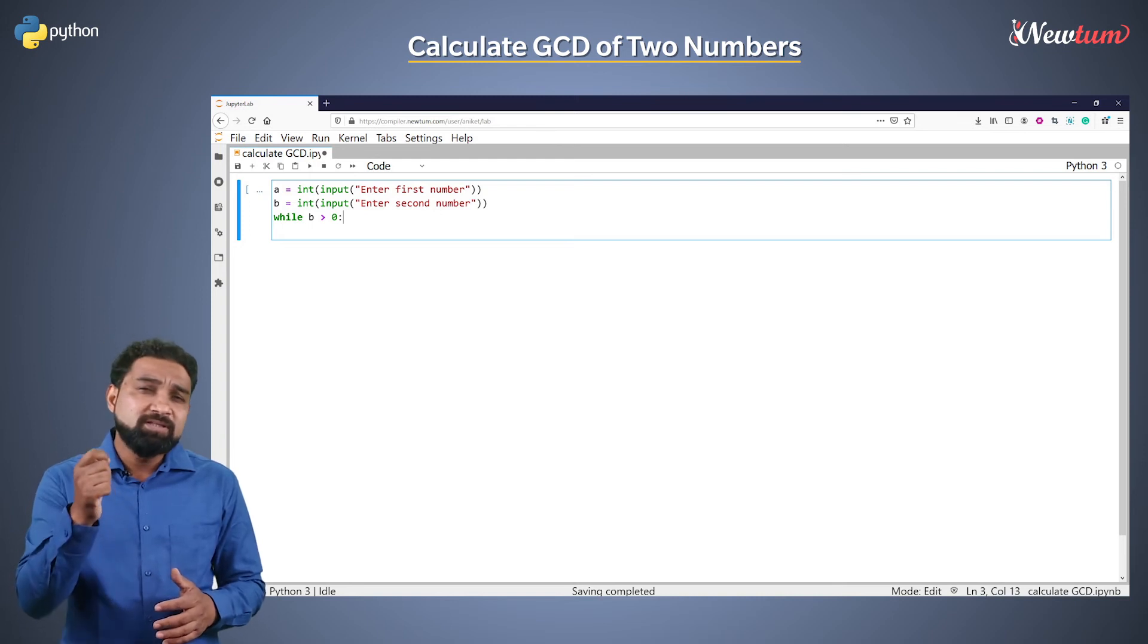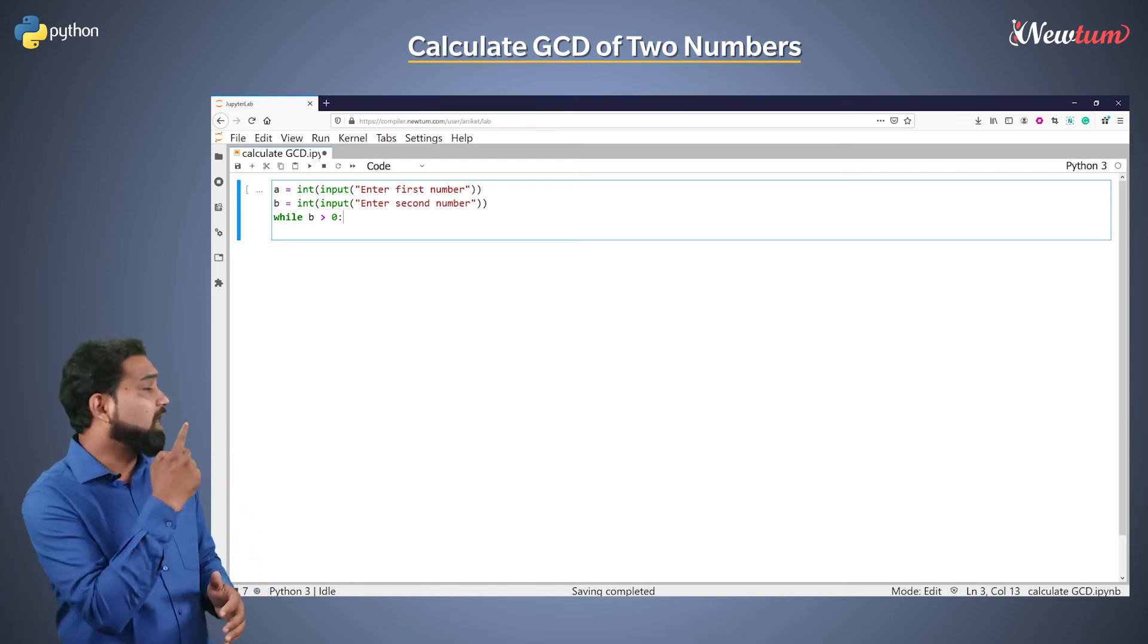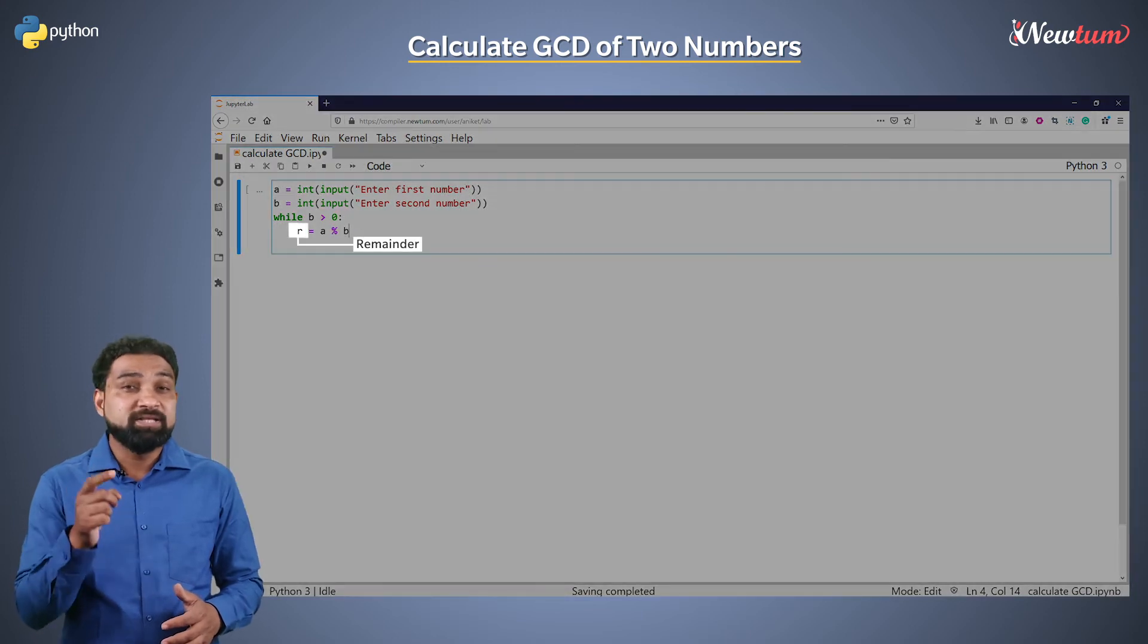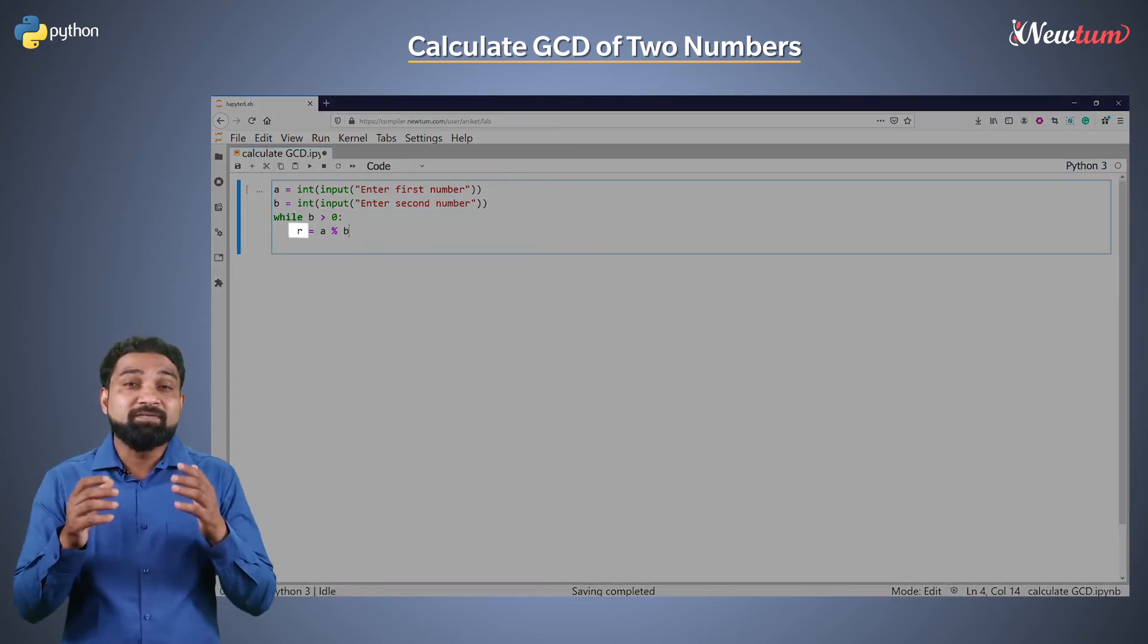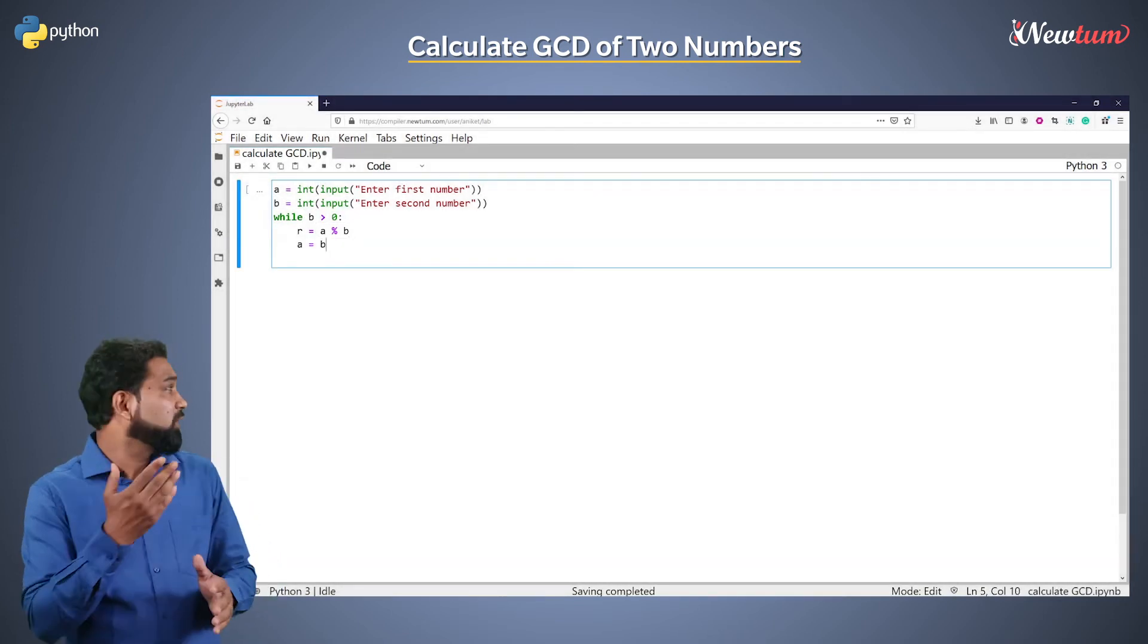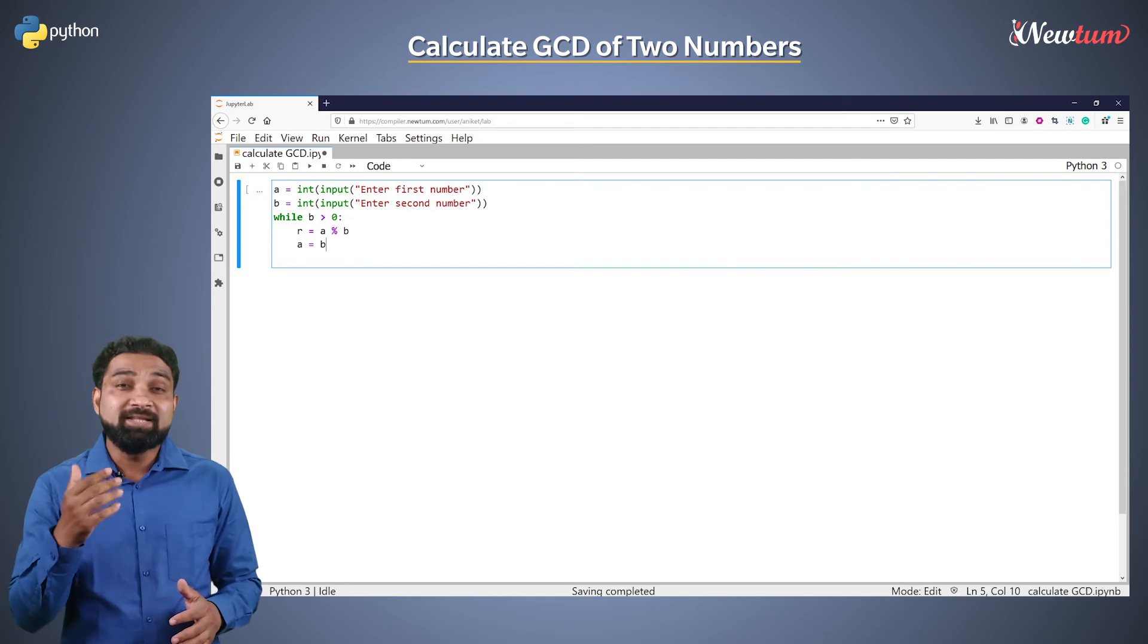Inside the while loop, write r equals a percent b, where r is the remainder we get after dividing a by b. Now we will assign the value of b to a, and then the value of remainder to variable b.